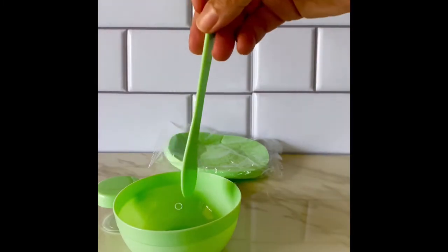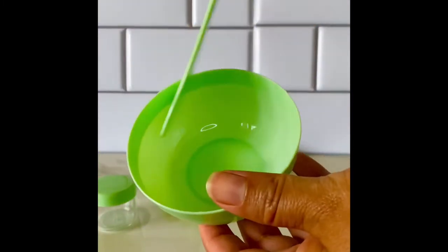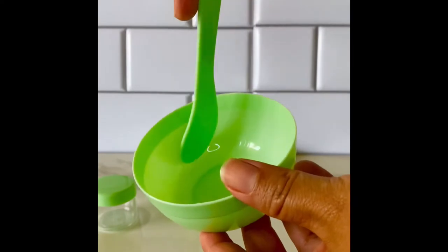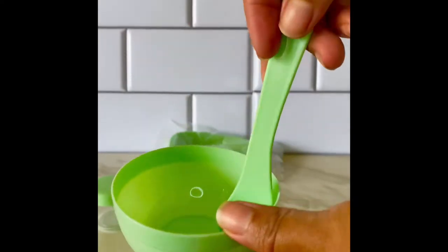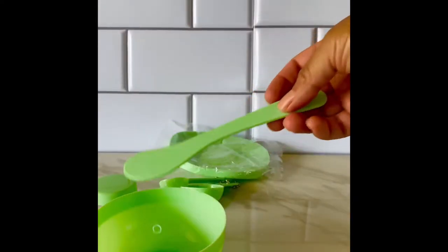And here I am taking out the spatula. It's cute because it's green and matches the whole set. It's nice to get into the little sides of the bowl so you can mix your clay mask or whatever mask you like to use on your face.